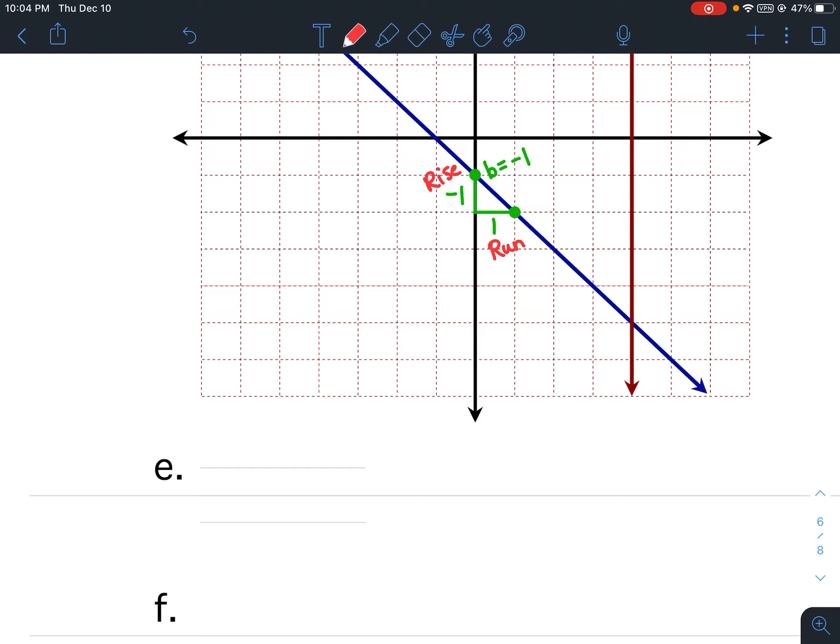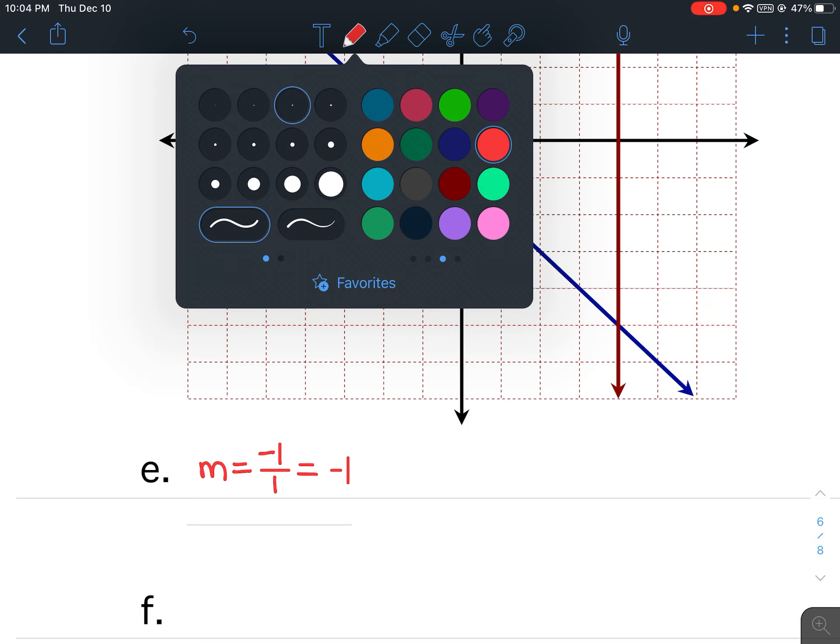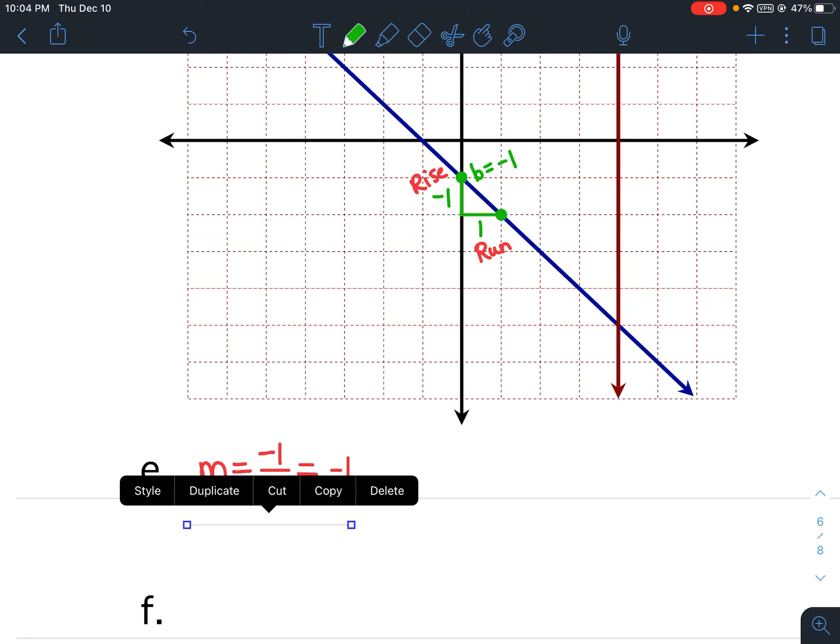So, the first thing I need to do is find my slope. So, my rise is negative 1 over 1. Well, because we're writing an equation, we want to simplify that. And negative 1 divided by 1 is negative 1. My y-intercept is where it crosses the y-axis. And that was negative 1. I crossed the y-axis at negative 1. So, my slope is negative 1. My y-intercept is negative 1.